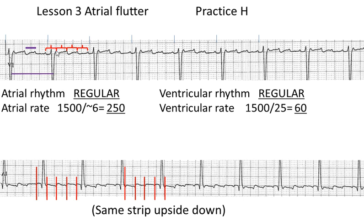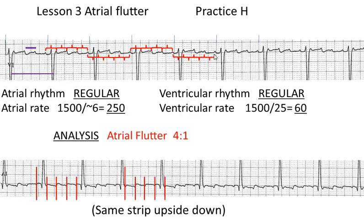Starting before the QRS: flutter wave number one, two, three, four — four flutter waves per QRS. In the next set, starting at the same place: one, two, three, four. Again: one, two, three, four. And again: one, two, three, four. This is a stable rhythm of four flutter waves for each QRS throughout the strip. Our answer is atrial flutter with a constant ratio of four-to-one atrial impulses per each QRS.